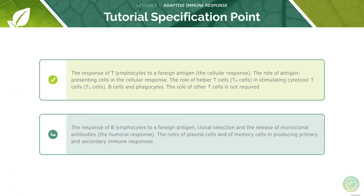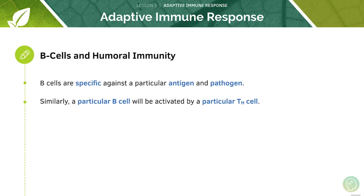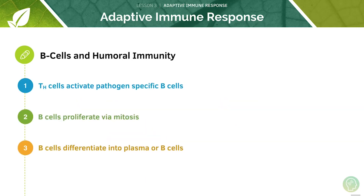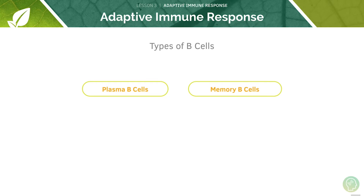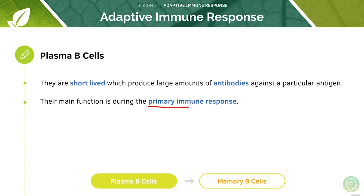Now let's look at the response of B lymphocytes to a foreign antigen. B cells, like T cells, are each specific against a particular antigen and pathogen. Similarly, a particular B cell will be activated by a particular T helper cell. The T helper cell activates the pathogen-specific B cells, which can then proliferate via mitosis. After proliferation, B cells differentiate into plasma B cells or memory B cells. Plasma cells are short-lived cells which produce large amounts of antibodies against a particular antigen, and their main function occurs during the primary immune response.